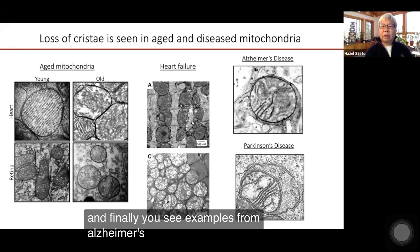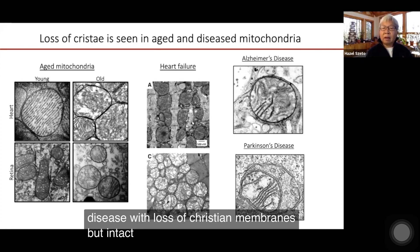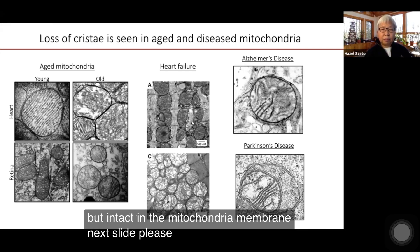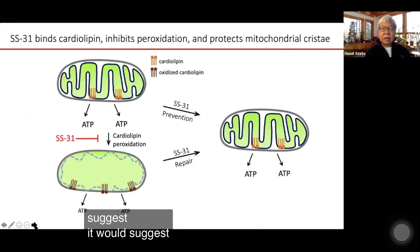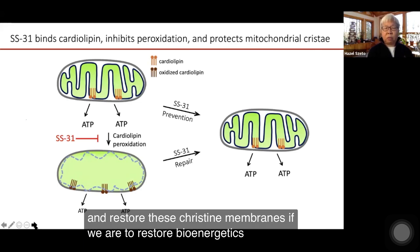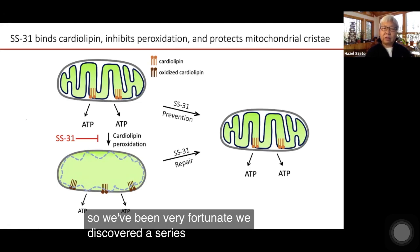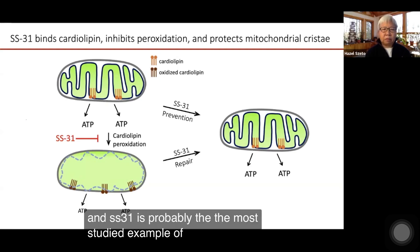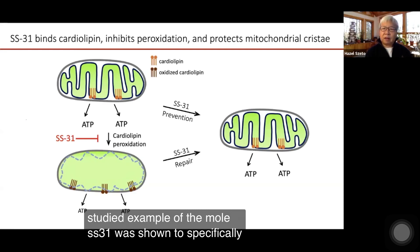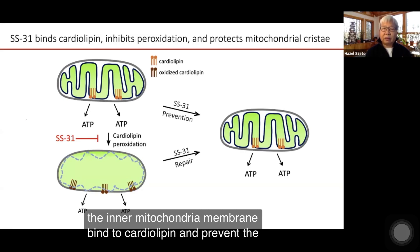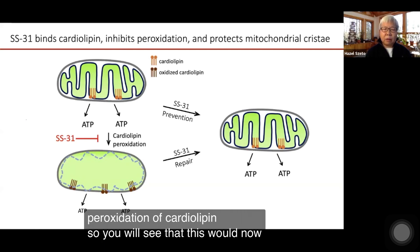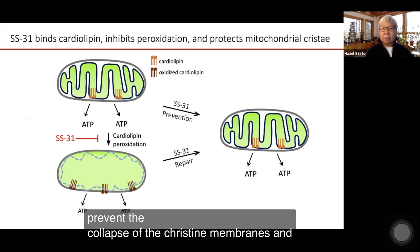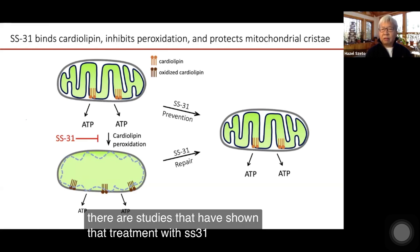You also see examples from Alzheimer's disease and Parkinson's disease with loss of cristae membranes but intact inner mitochondrial membrane. These studies suggest that it is really important to try to repair cardiolipin content and restore these cristae membranes if we are to restore bioenergetics. We've been very fortunate to discover a series of small peptides called the Szeto-Schiller peptides. SS31 is probably the most studied example, and it was shown to specifically target the inner mitochondrial membrane, bind to cardiolipin, and prevent its peroxidation, thereby preventing collapse of the cristae membranes.